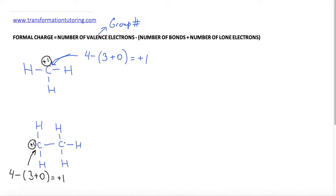Let's go ahead and do the other carbon — the right carbon. Again, it has 4 valence electrons because it's in group 4, and it has 4 bonds that it's attached to, and again no lone electrons. 4 minus 4 is 0, meaning it does not have a formal charge, so we do not have to put it in.